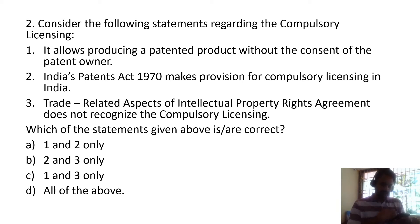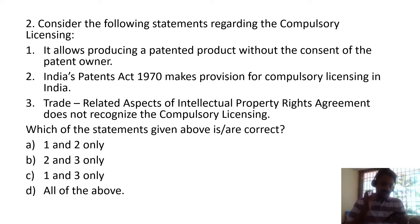Let us know why statements 1 and 2 are correct. As per the World Trade Organization, compulsory licensing is when a government allows someone else to produce a patent product or process without the consent of the patent owner, or plans to use the patent-protected invention itself.